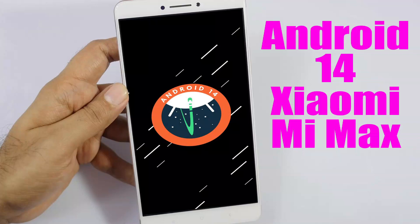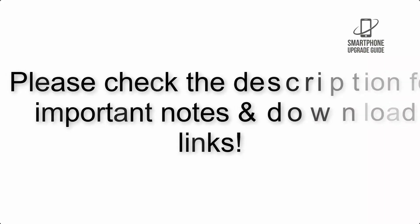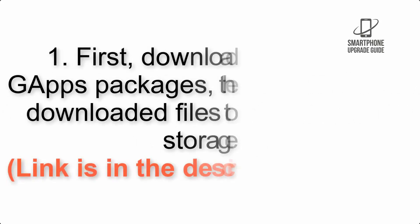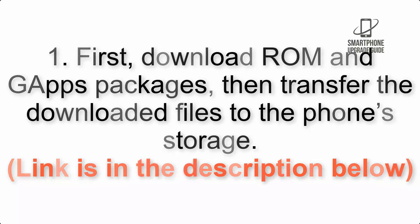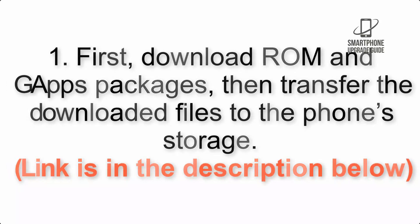Install Android 14 on Xiaomi Mi Max via AOS PROM. Please check the description for important notes and all the download links. First, download the ROM and GApps packages, then transfer the downloaded files to the phone storage. The link is in the description below.